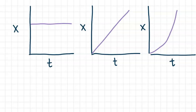For the second one we can see that we have a nice linear relationship, so we're increasing our position as time goes by. On our third example we have a scenario where we're increasing our position but we are changing how quickly we're moving. The first thing I wanted to do is take a look at this middle one. We can look at our rise over our run — increase in our y-axis over increase in our x-axis — and be able to determine the slope of this line.